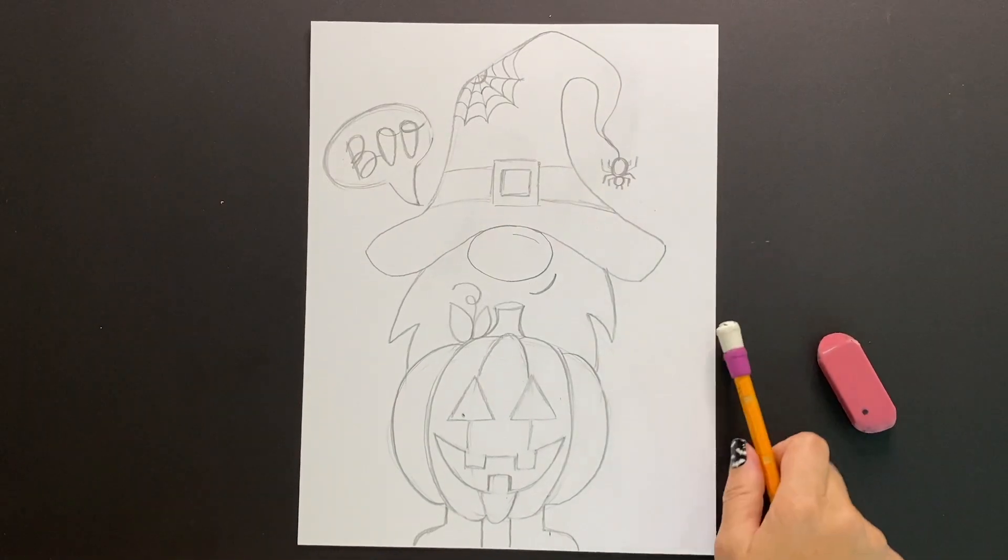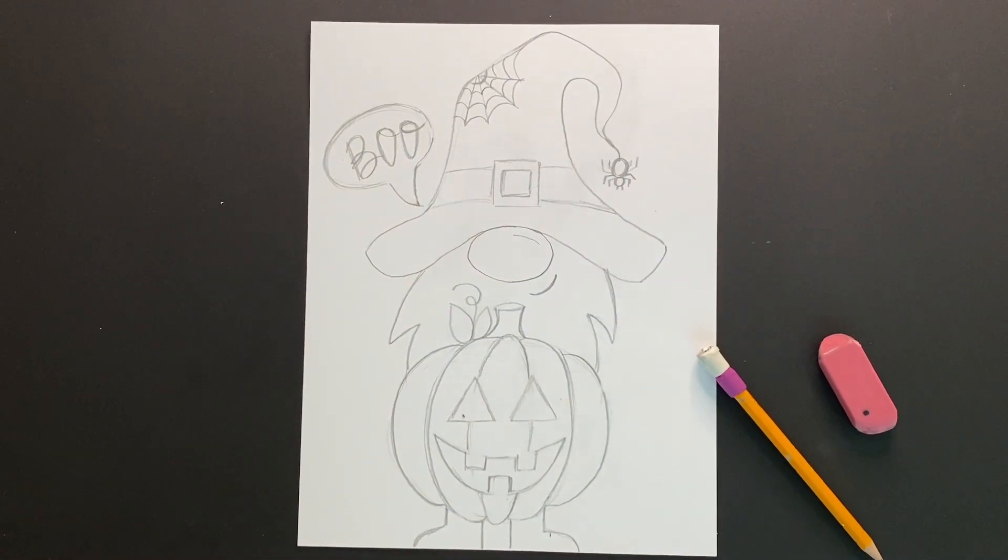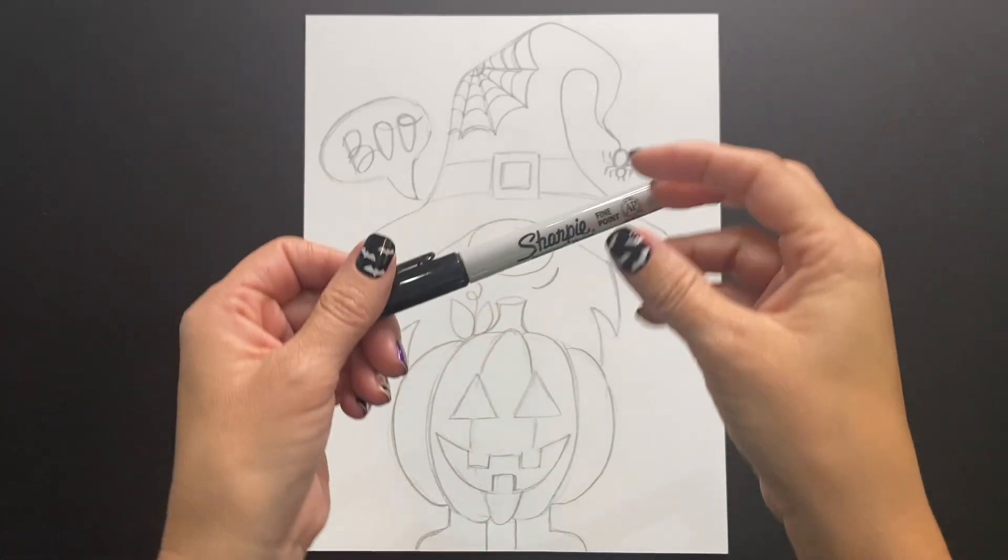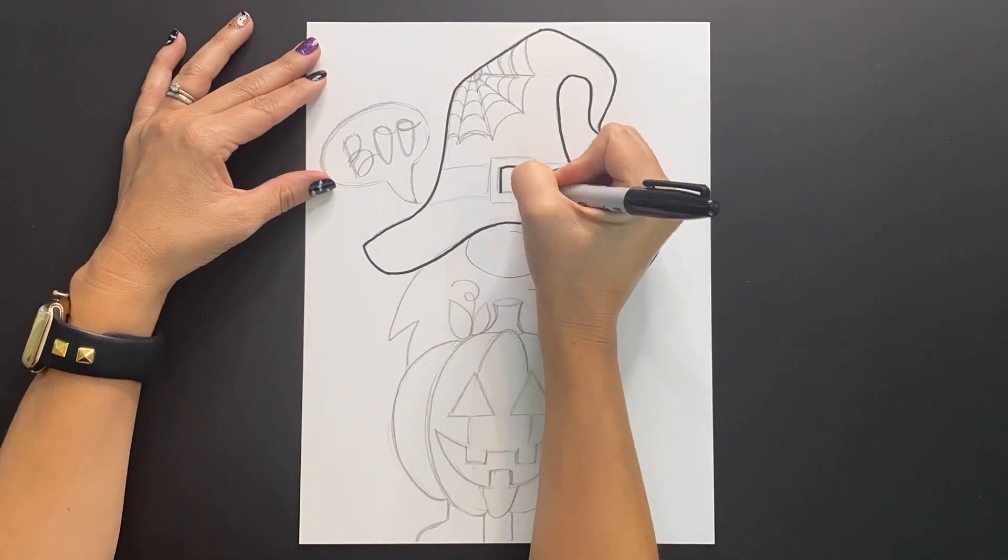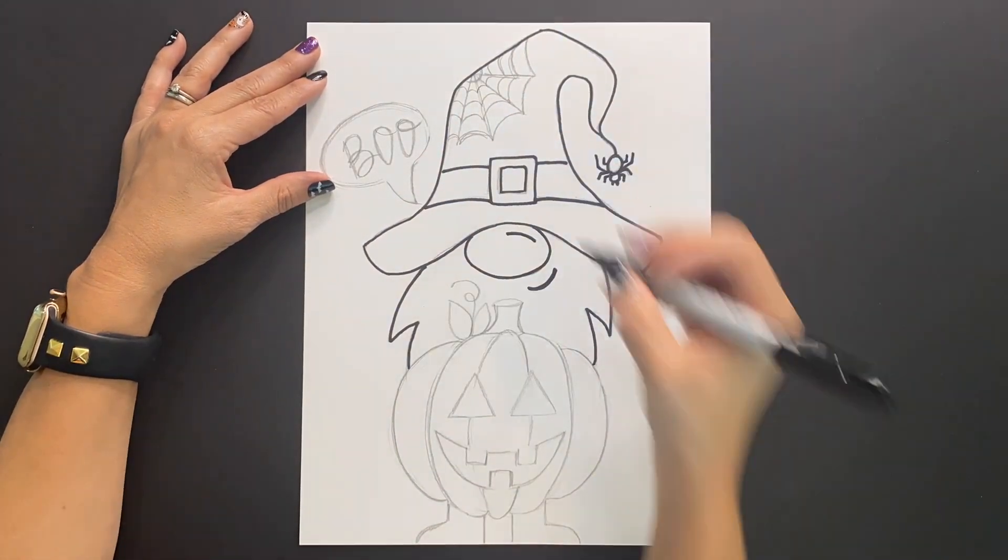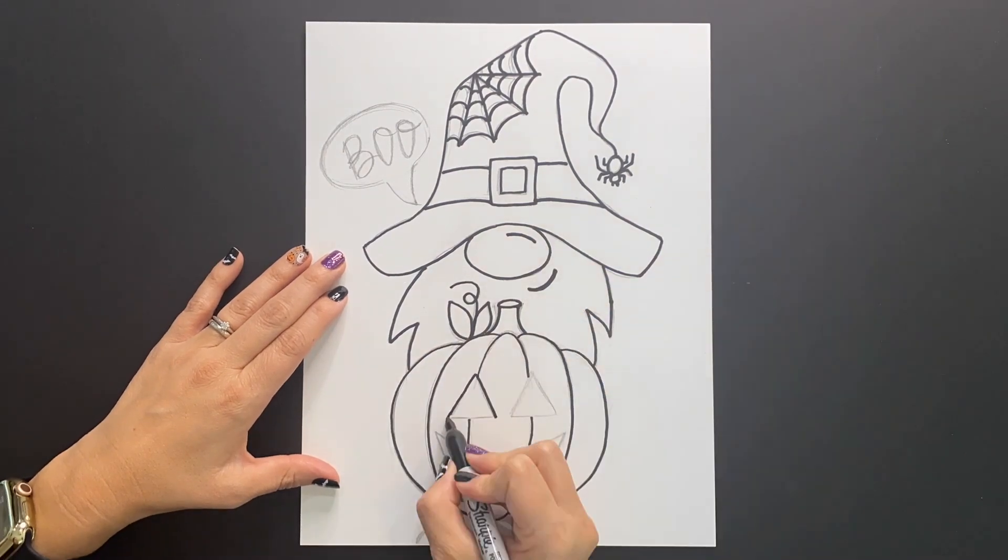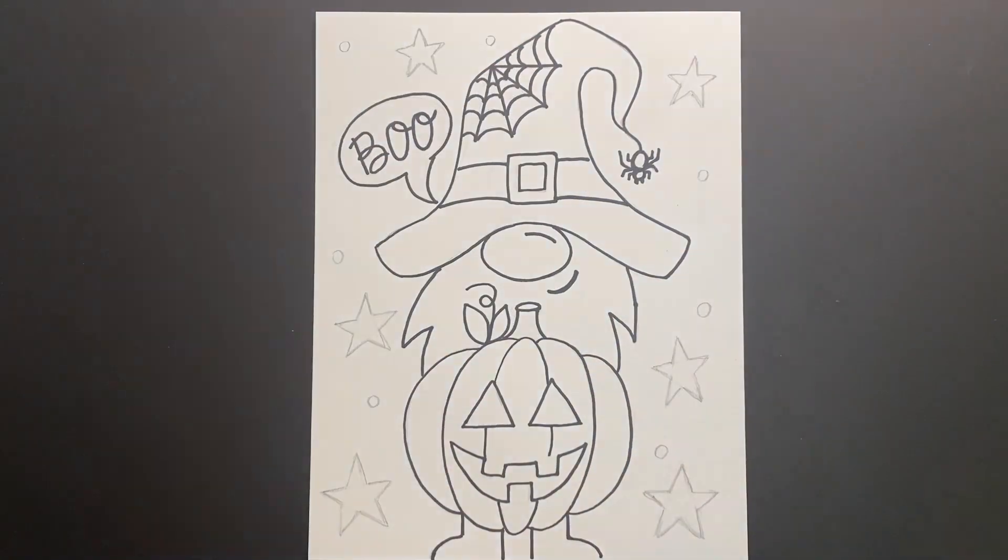Next, it's time for you to begin decorating your background. So I drew a little thought bubble saying boo and then I'm going to draw some stars in the background. Maybe you want to include a bat or a moon or a ghost. That's totally up to you as the artist. Once you finish drawing in any additional details that you wanted to include, it's time to grab that sharpie or black marker and start tracing all the lines that you just drew.